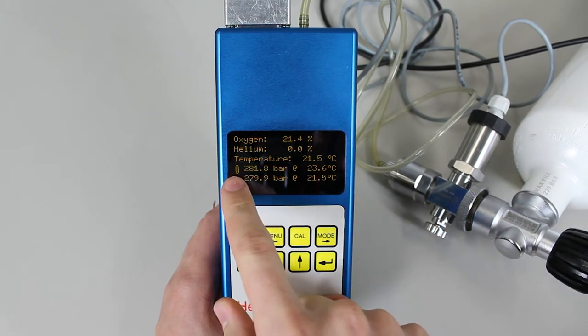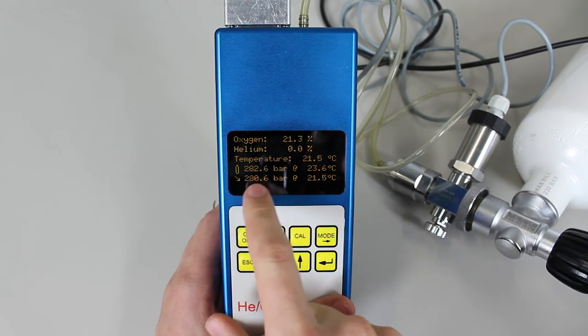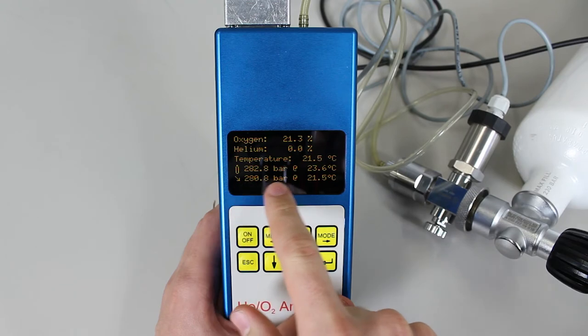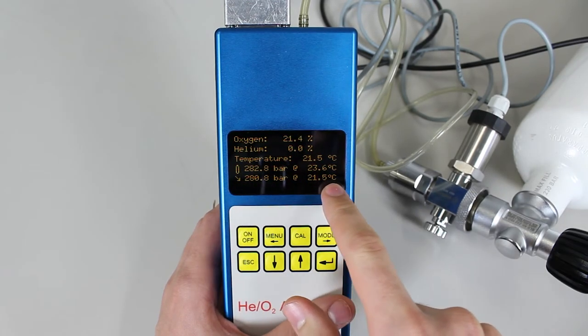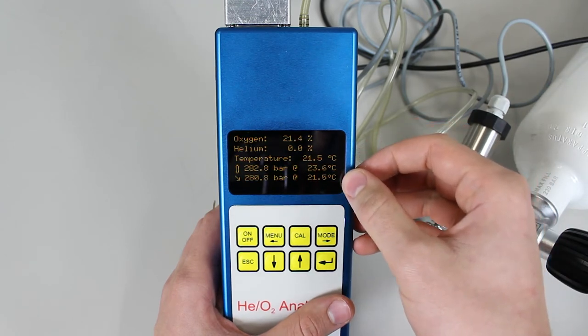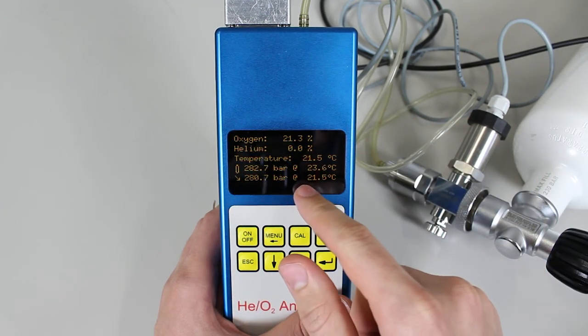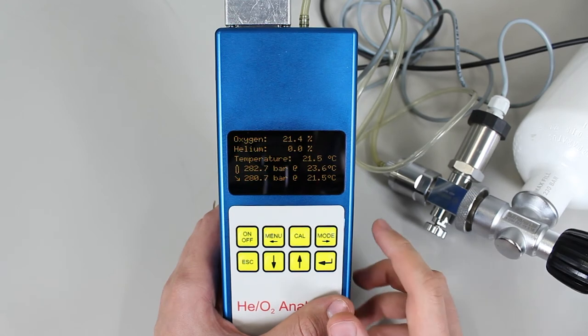we can see the immediate pressure of the tank right now and the pressure which the tank will have when it cools down to the set room temperature. Right now it's 23.6 and this is the pressure it will have when it reaches 21.5 degrees Celsius.